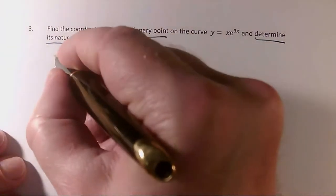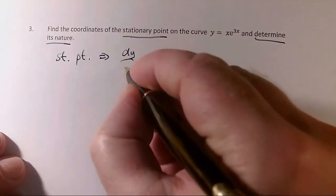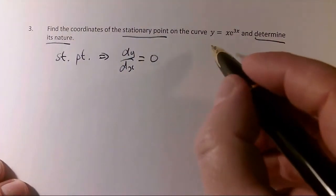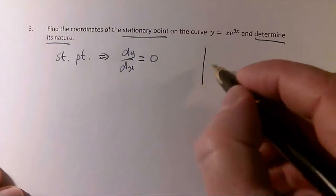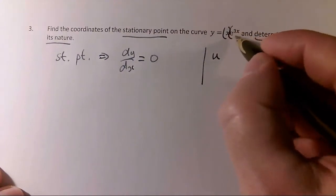So I'm going to start by saying stationary point, condition for that is that dy/dx equals 0. So to do dy/dx for this, I have to swap this as a product. So I'm going to have a u and a v bracket times a bracket. That's why it's a product.